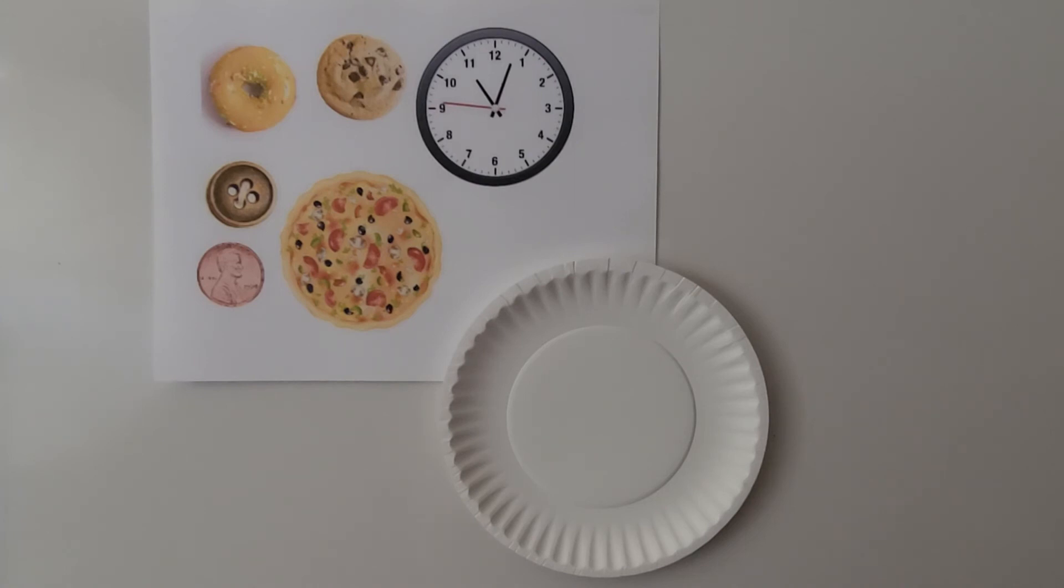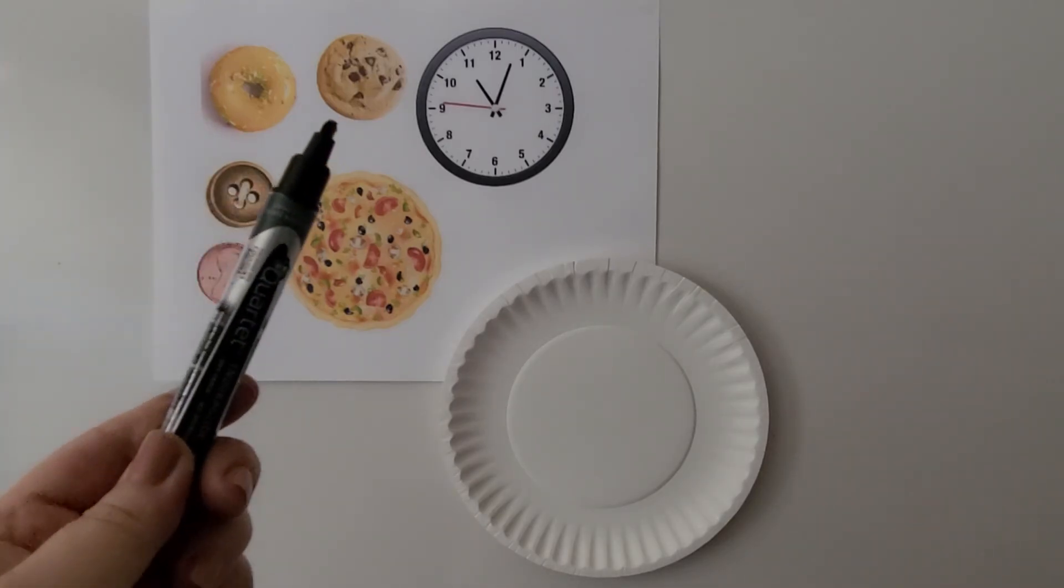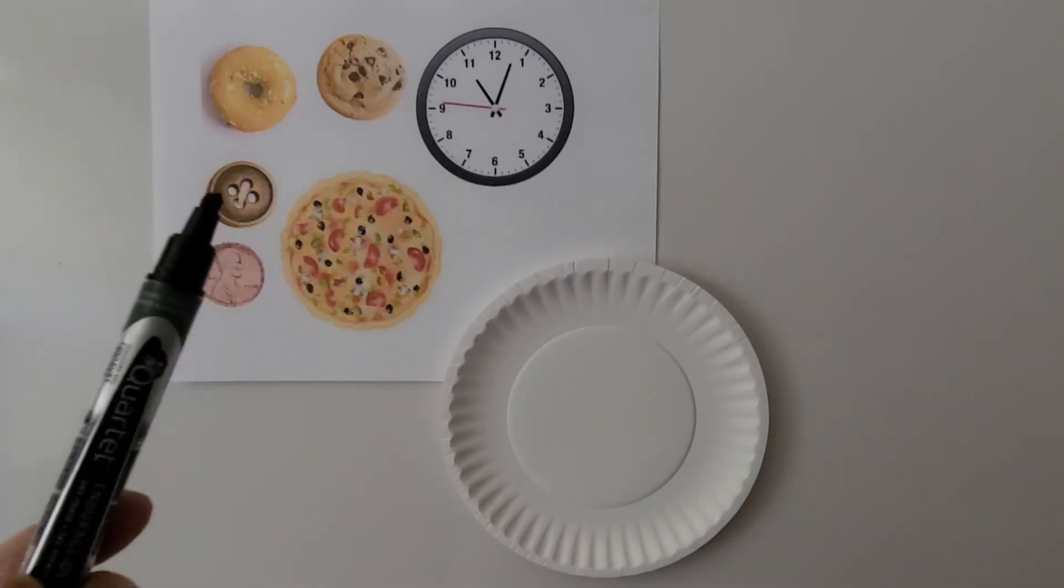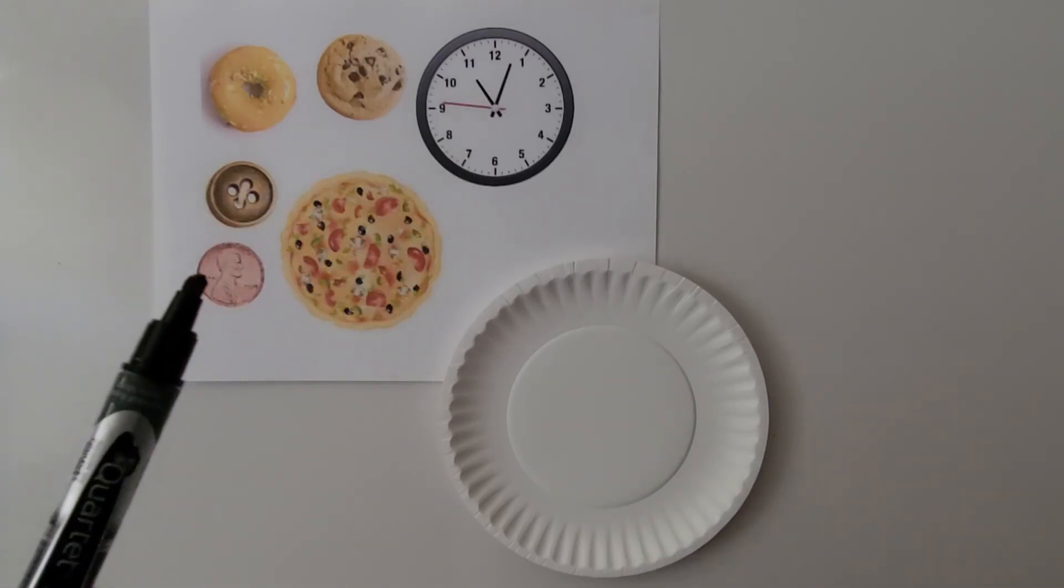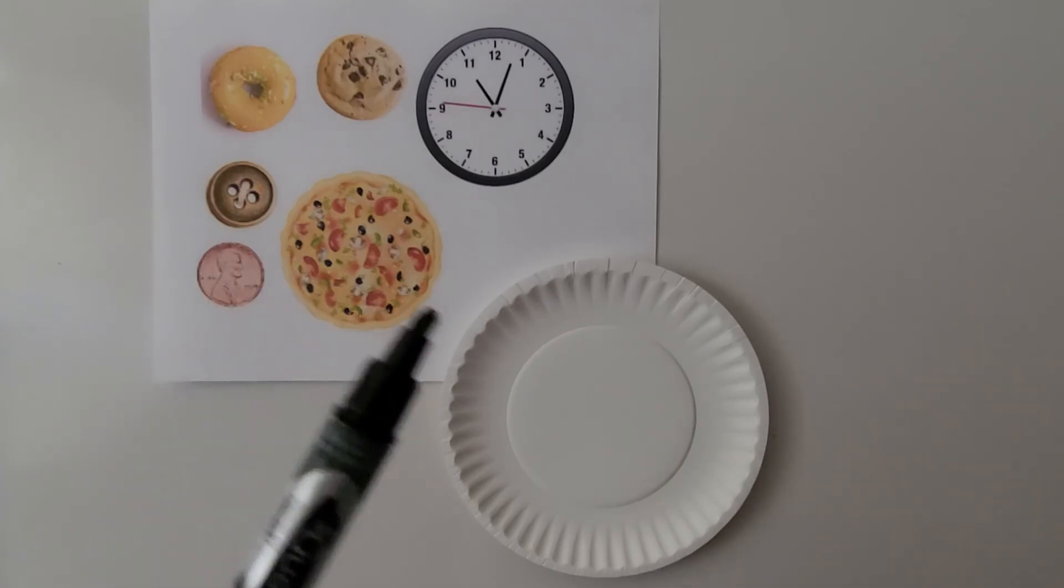There are circles all around us everywhere. A donut is a circle. A cookie can be a circle. A clock face can be a circle. A button and a penny can be a circle. And a pizza can be a circle. A paper plate can even be a circle.